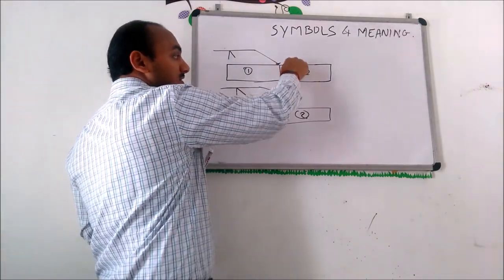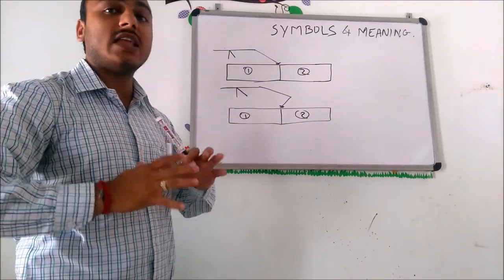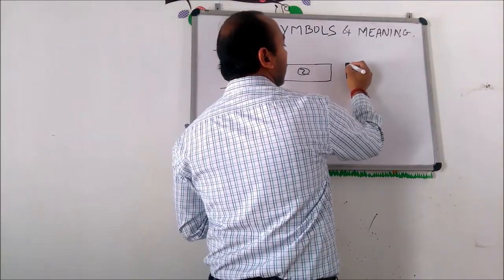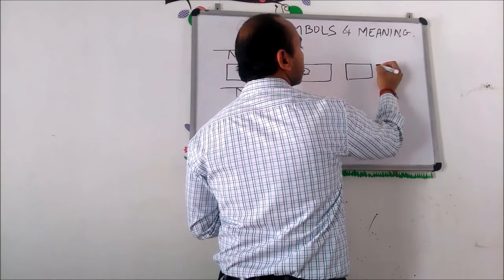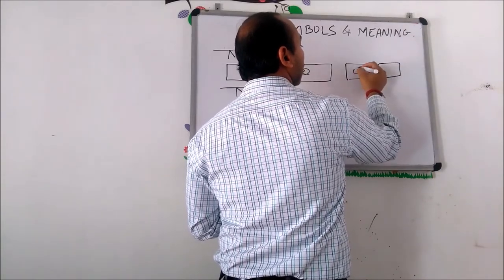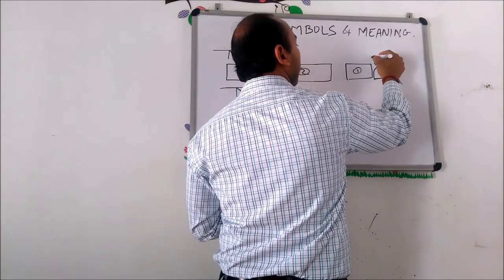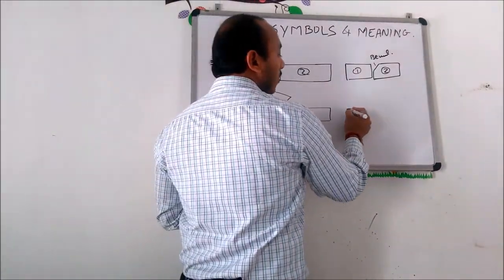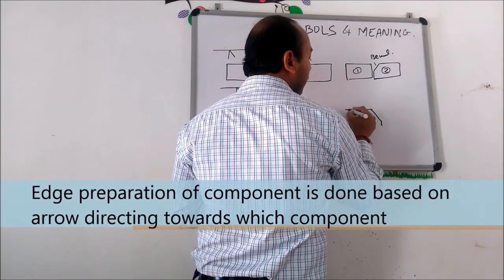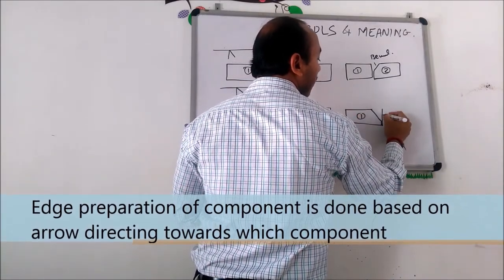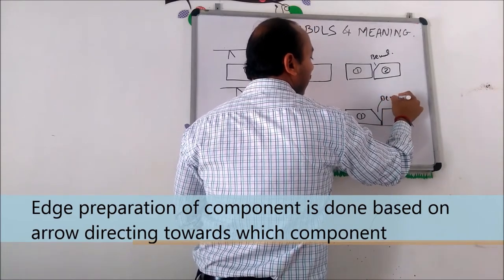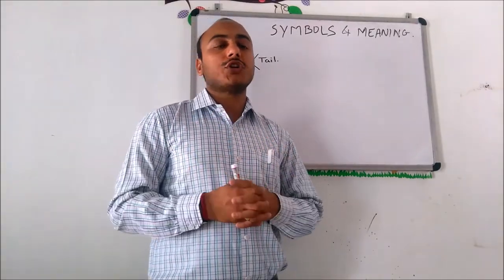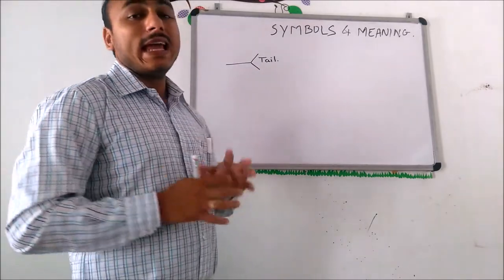Now, suppose component one and component two are to be joined by groove weld. There is a straight arrow symbol and a broken arrow symbol. The direction of the arrow indicates on which component the groove preparation will be done. If the arrow is targeting component two, edge preparation will be done on component two. If the arrow is directing towards component one, groove preparation will be done on component one, and then the groove weld will be given.